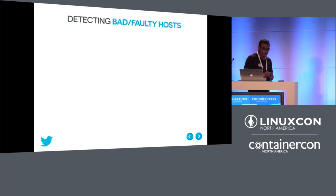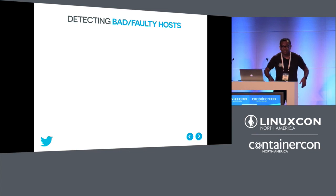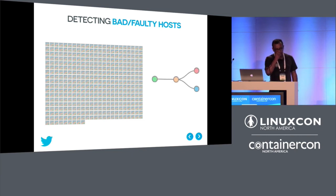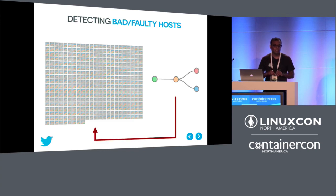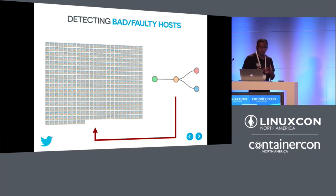To detect bad and faulty hosts proactively, we run another topology that continuously collects machine metrics and monitors processing speed. When a machine is identified as faulty, it is blacklisted into the scheduler so it is removed from scheduling consideration, keeping the cluster healthy.